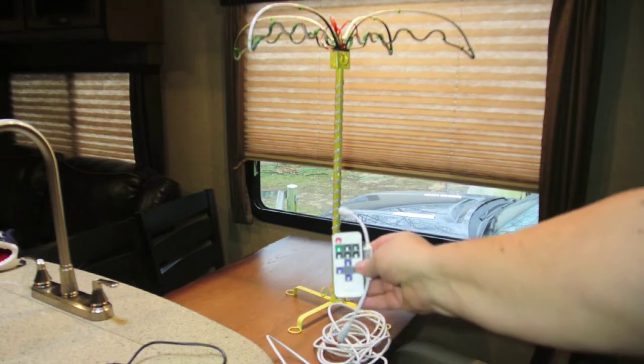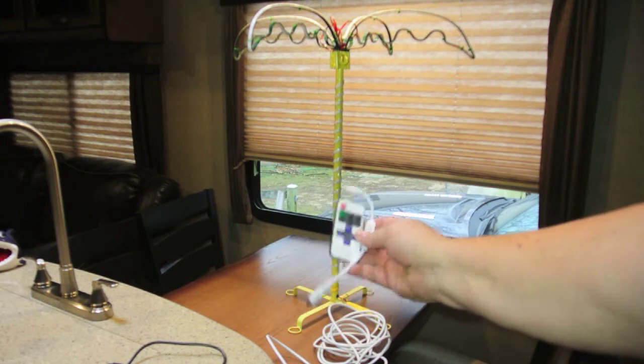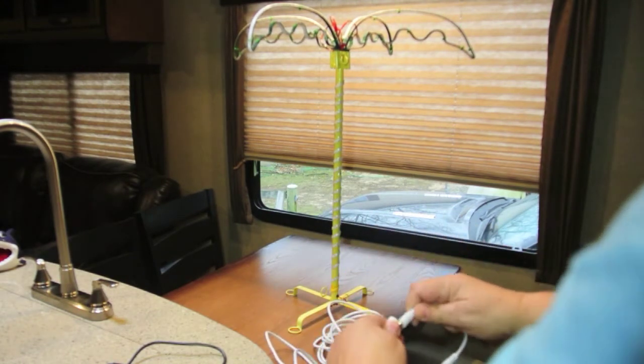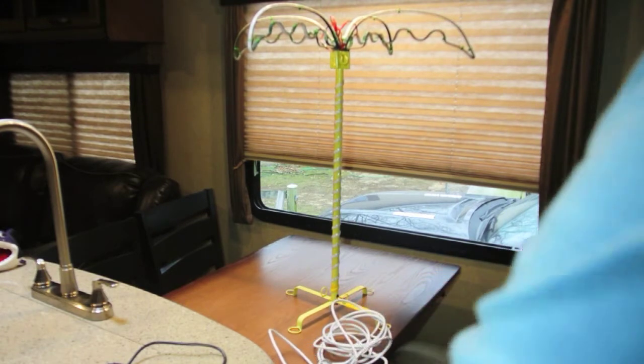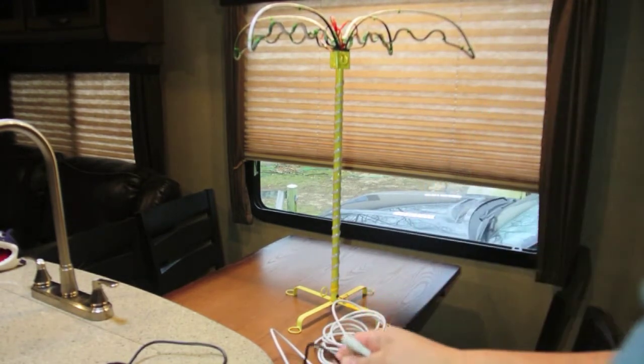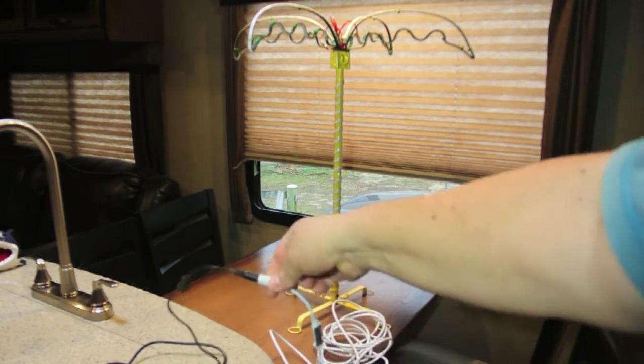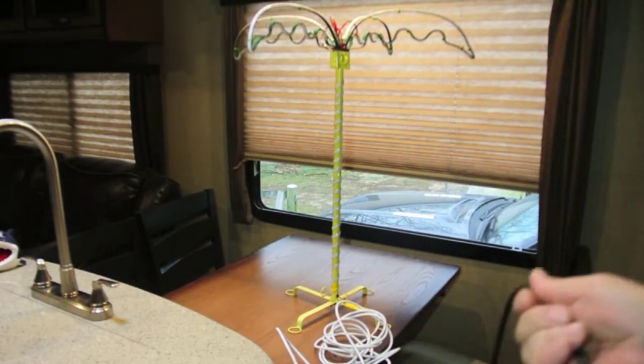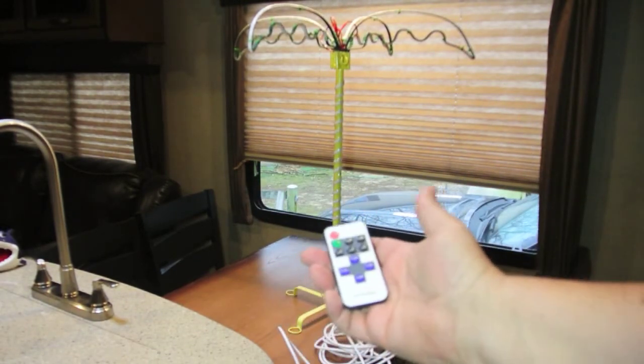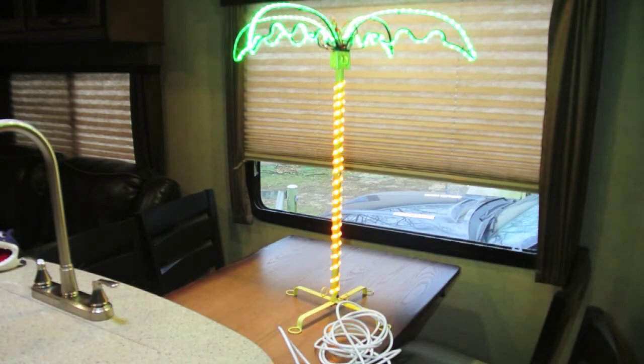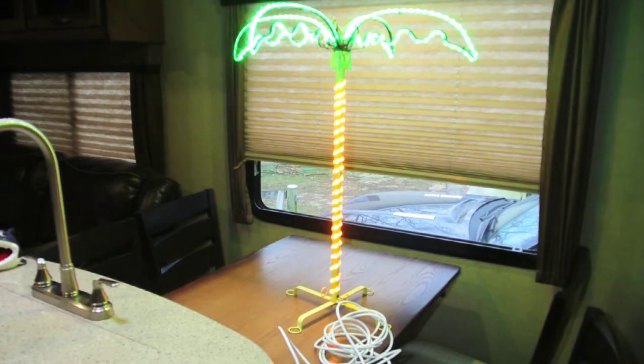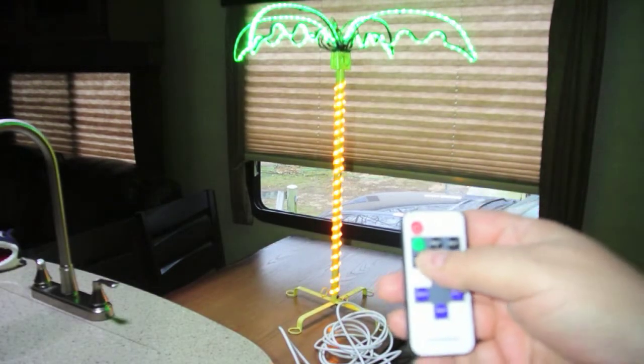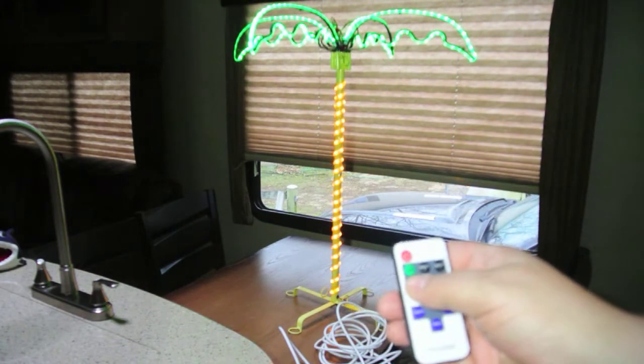For about two to three dollars, I ran across this monochrome controller. When I plug this into here and then plug this into here, now see what happens. I'm going to plug this into the power source. Now with this little remote, I have remote control of the palm tree. I'm going to turn the overhead lights off so you can see it. Now with this controller, if I turn it to the light, I can control the brightness.